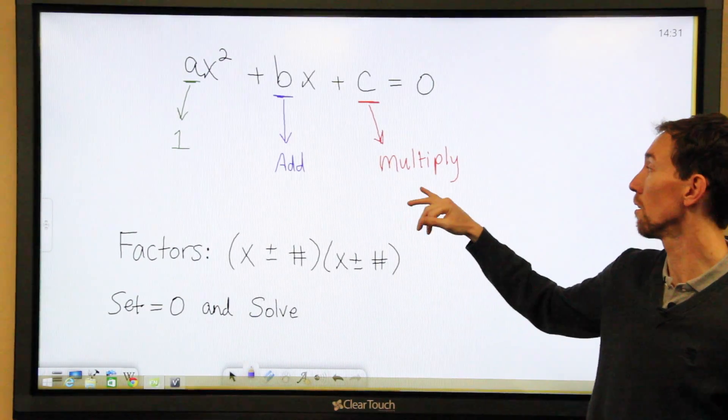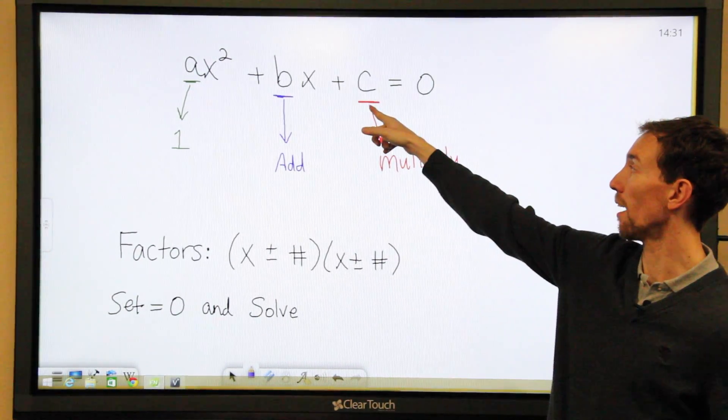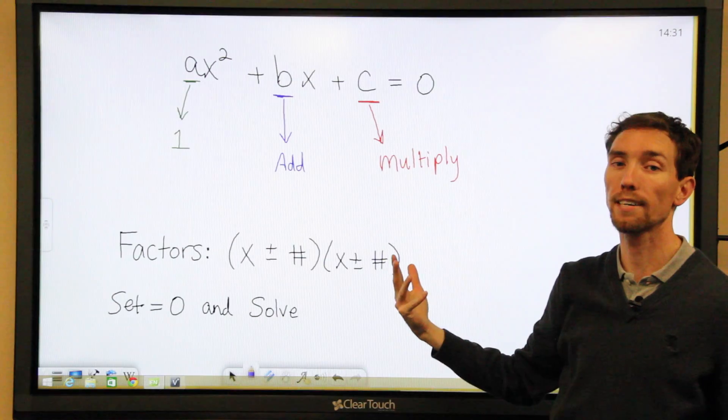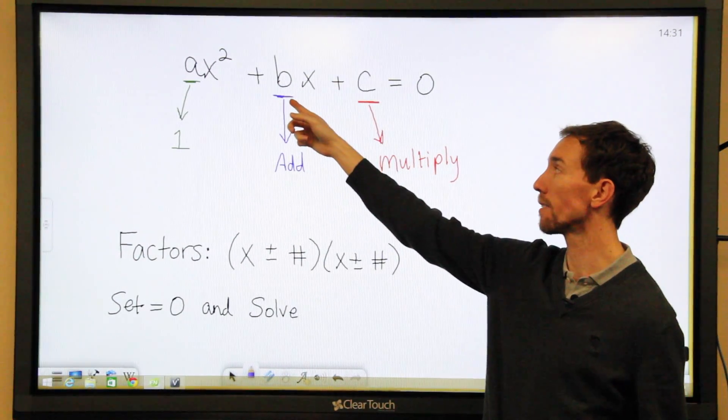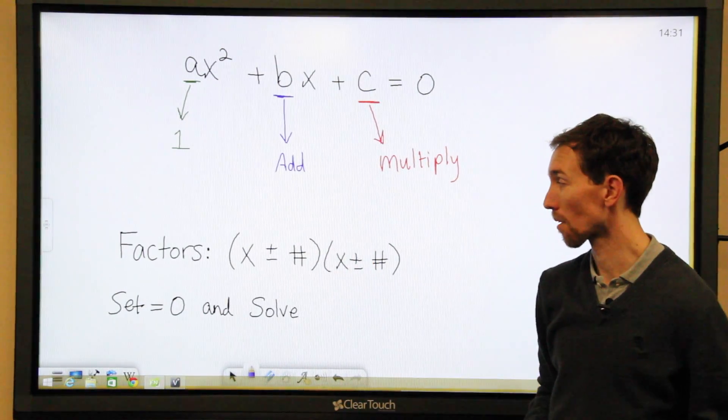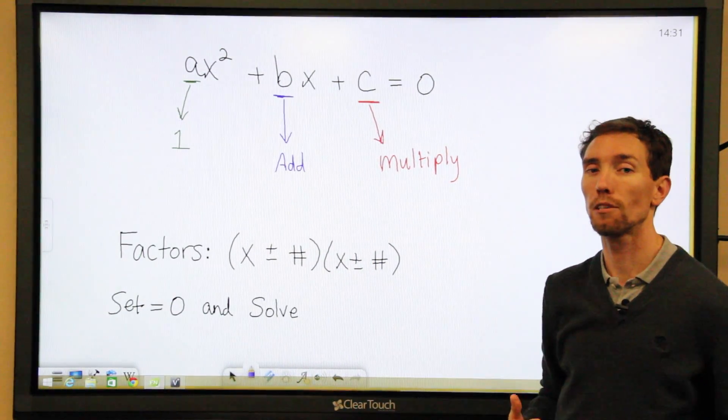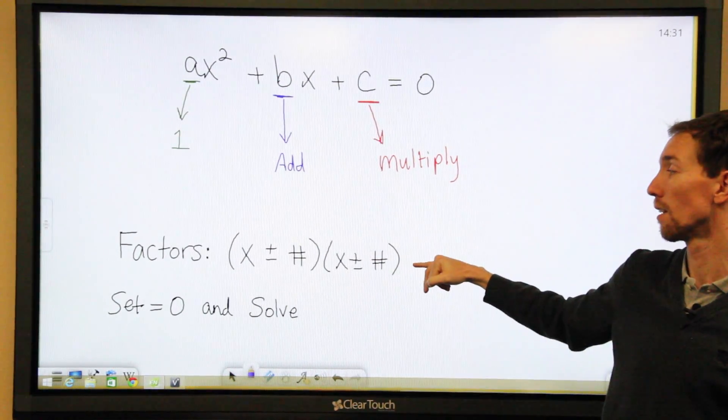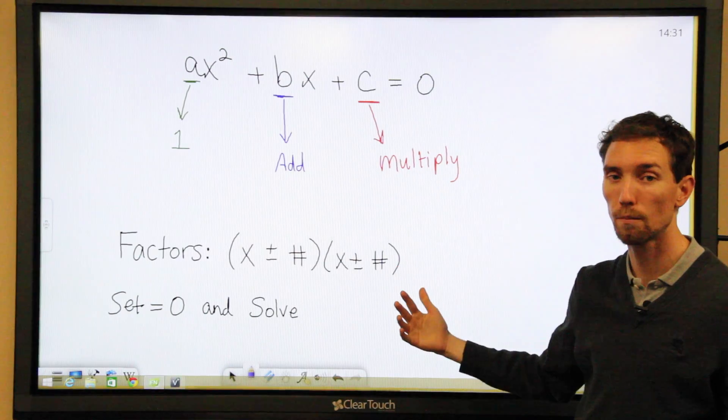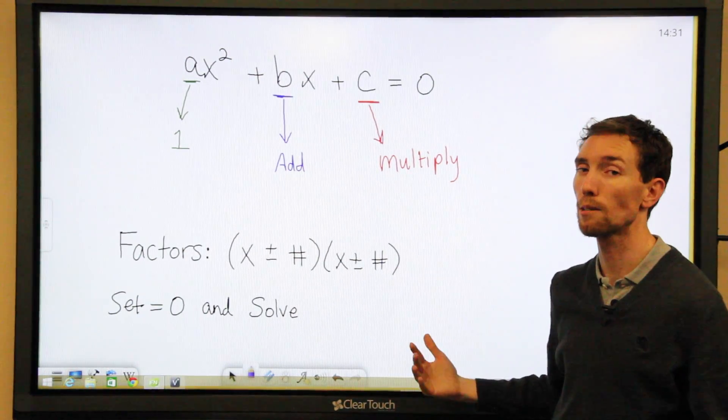The process is you look at your c value and you want to find two factors or two numbers that multiply to get c, but add up to get b. So that's where the sum comes in. When you do that, you're going to break your quadratic equation into two different factors. So they're going to be in parentheses. It'll be (x ± #)(x ± #).